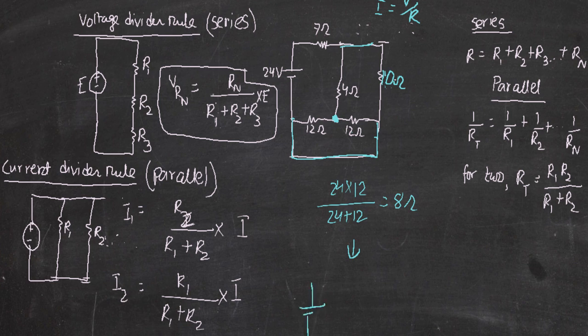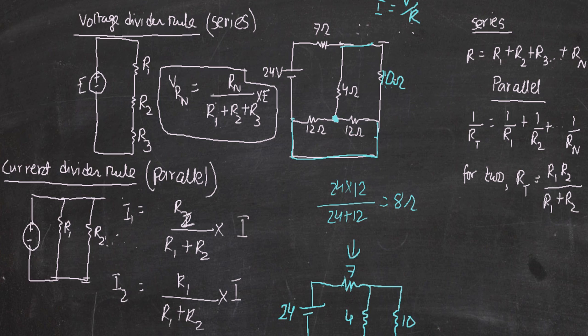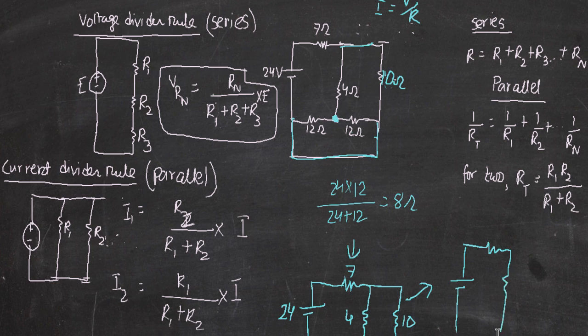The new simplified circuit is: 24 volts, with 7 ohms, 4 ohms, 6 ohms, and 10 ohms. Now 6 + 4 = 10 ohms, and those 10 ohms are in parallel with the other 10 ohms — two equal resistors in parallel gives half: 10 / 2 = 5 ohms. So the final simplified circuit is 24 volts with 7 ohms and 5 ohms in series. Total current: I = 24 / (7 + 5) = 24 / 12.